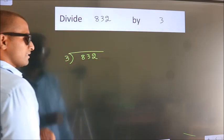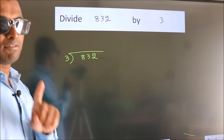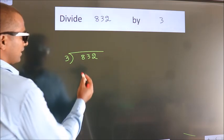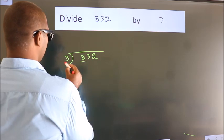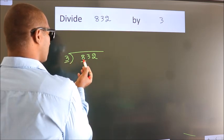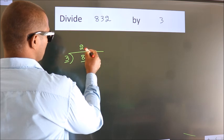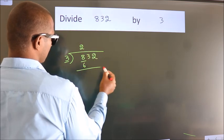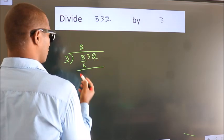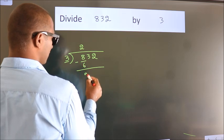This is your step 1. Next, here we have 8, here 3. A number close to 8 in the 3 table is 3 times 2 is 6. Now we should subtract. We get 2.